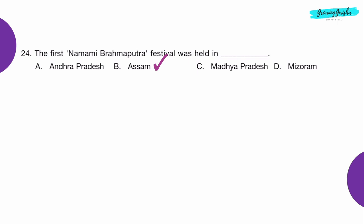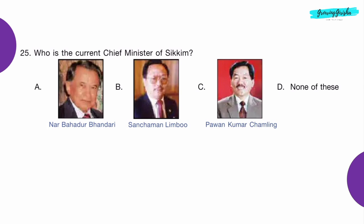Question 24: The first Namami Brahmaputra festival was held in ___. Option B: Assam.